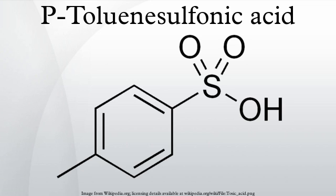Tosylate esters are used as alkylating agents because the tosyl group is electron-withdrawing, which makes the tosylate anion a good leaving group. The tosyl group is also a protecting group for alcohols and amines, prepared by combining the alcohol with 4-toluenesulfonyl chloride, usually in an aprotic solvent, often pyridine, the basicity of which activates the reaction.